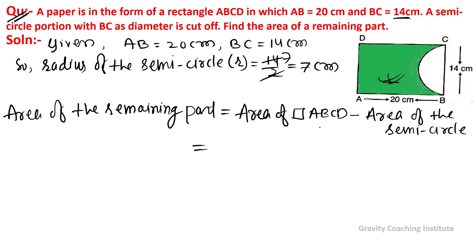Rectangle area is length into breadth, so we're writing here AB into BC minus area of the semicircle half pi r square, so equal to